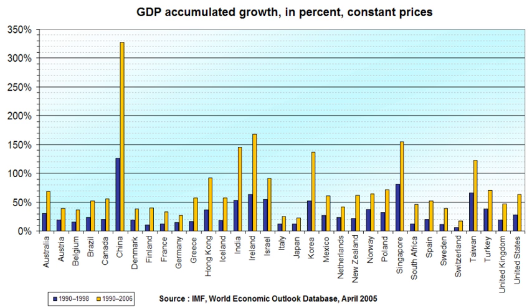Measurement of economic growth uses national income accounting. Since economic growth is measured as the annual percent change of gross domestic product (GDP), it has all the advantages and drawbacks of that measure. The economic growth rates of nations are commonly compared using the ratio of the GDP to population or per capita income. The rate of economic growth refers to the geometric annual rate of growth in GDP between the first and the last year over a period of time, which ignores the fluctuations in the GDP around this trend.